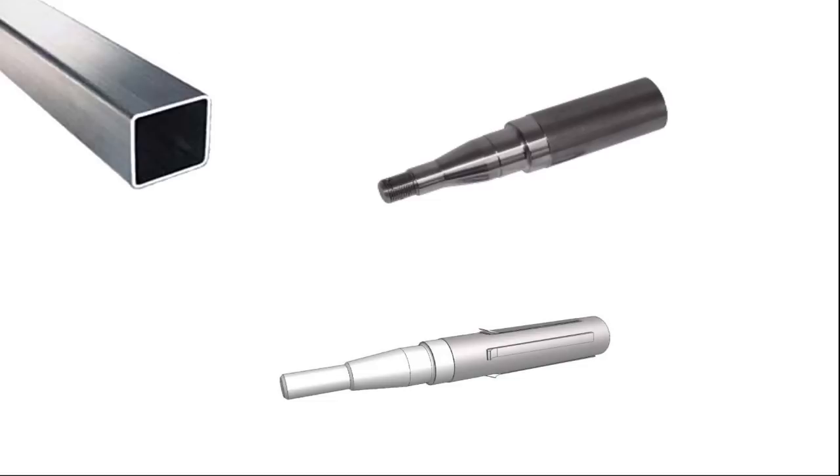So the first thing you need is square hollow section, mild steel. In our case and in most people's cases this will be 50 by 50, that's millimeters by 5 millimeters thick. Then you're going to need some axle stubs. As here. You can buy these from your local trailer supplier.